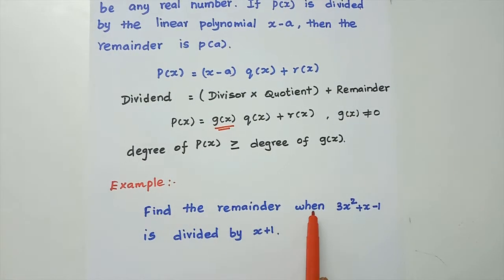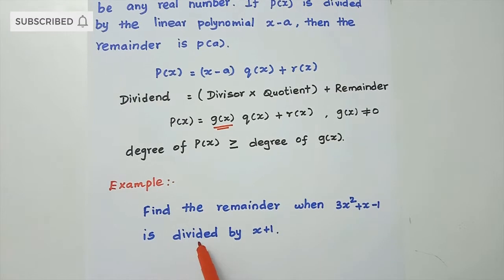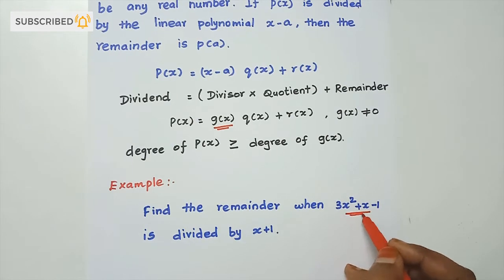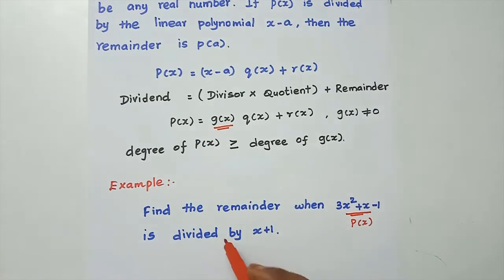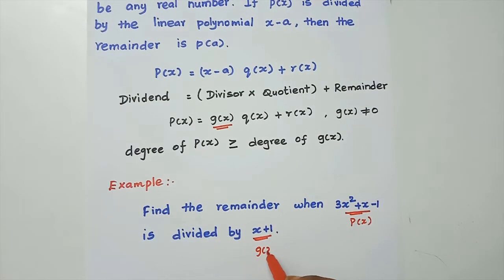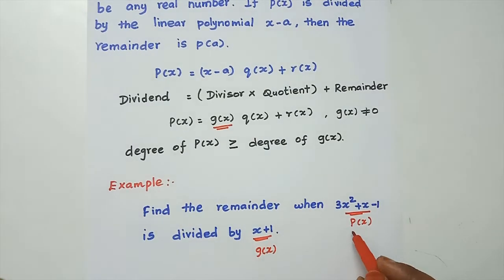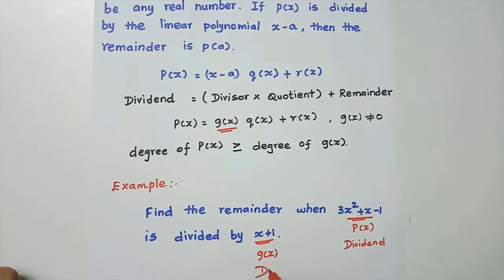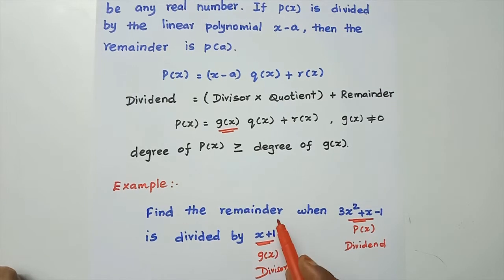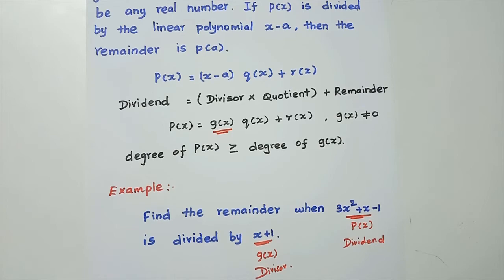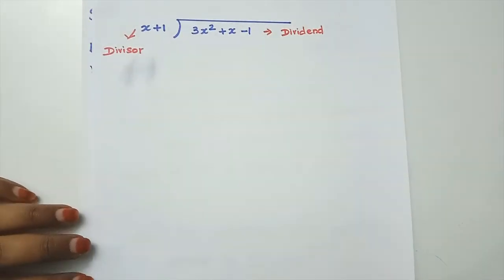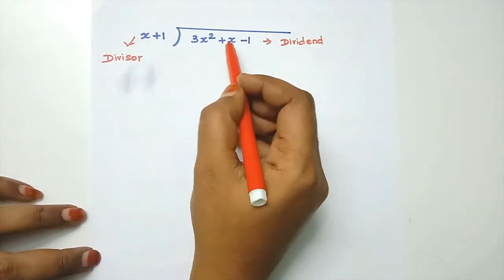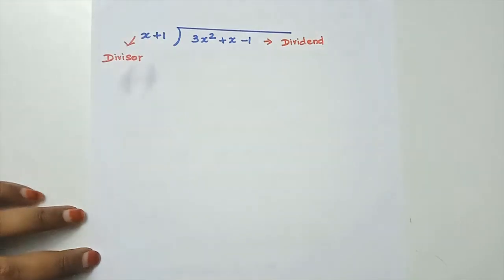Find the remainder when 3x squared plus x minus 1 is divided by x plus 1. Here 3x squared plus x minus 1 is the dividend and x plus 1 is the divisor.